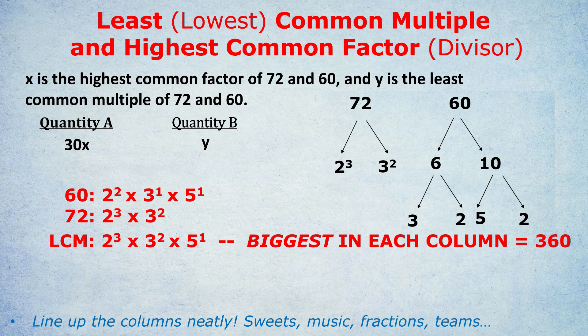Let me demonstrate that. For the LCM, the first number would be 2 cubed because 2 cubed is bigger than 2 squared. Then it would be 3 squared because 3 squared is bigger than 3 to the 1. And then it would be 5 to the 1 because 5 to the 1 is bigger than blank, bigger than nothing. And yes, for LCM, it's multiplied just as it was for prime factorizing. If we actually multiply that 2 cubed times 3 squared times 5 to the power of 1, we get 360. And what does that mean again for LCM? It means 360 is the smallest number that both 72 and 60 both go into.